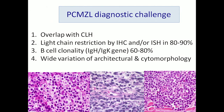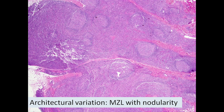Diagnostic challenges: MZL overlaps with cutaneous lymphoid hyperplasia. Light-chain restriction by in-situ hybridization or immunohistochemistry is not always present. Clonality of the IgH gene or IgK gene is not as sensitive as the gamma-TCR or beta-TCR. And there is a wide variation in the architectural and cytomorphology of these lymphomas. The cytology of marginal zone lymphomas can be monocytoid — with very abundant clear cytoplasm — or lymphoplasmacytic, purely plasmacytic, immunoblastic-looking, or centrocyte-like.